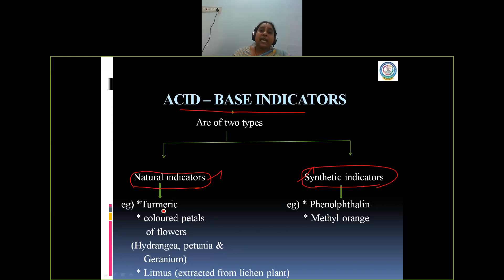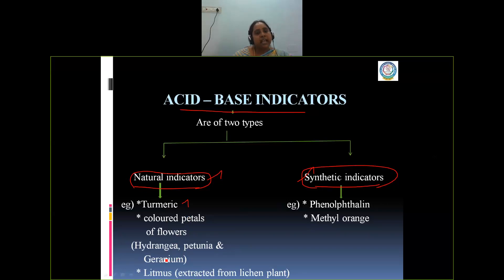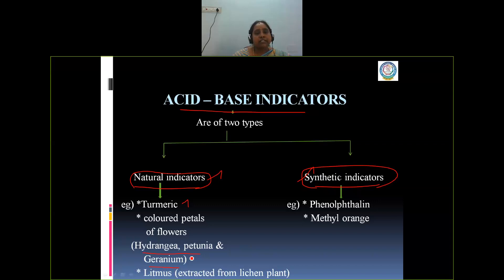What are the natural indicators we have to identify acid-base solutions? We have turmeric — we will be using it in cooking, so it is a domestic material that can be used as an indicator. And colored petals of flowers like hydrangea, petunia, and geranium. They have exclusively dark-colored petals which can be used for identifying acid-base substances. We have to take the extract of these flowers, and those extracts will be tested with acid-base solutions. By changing the color of acidic or basic solutions, we can identify the nature of the substance.